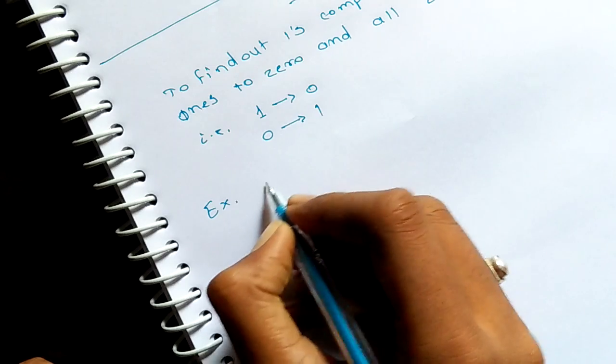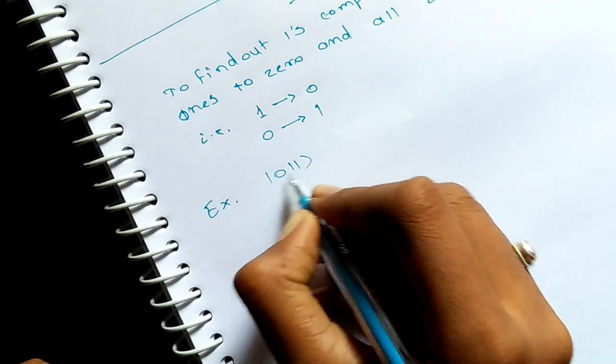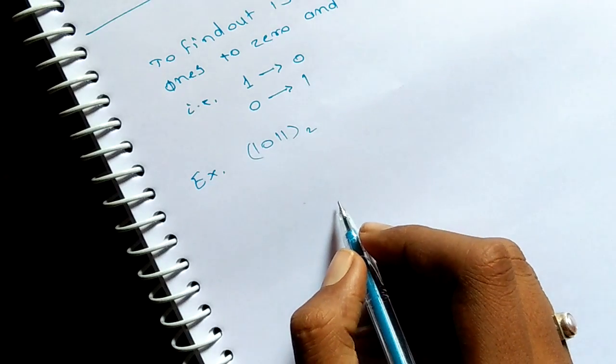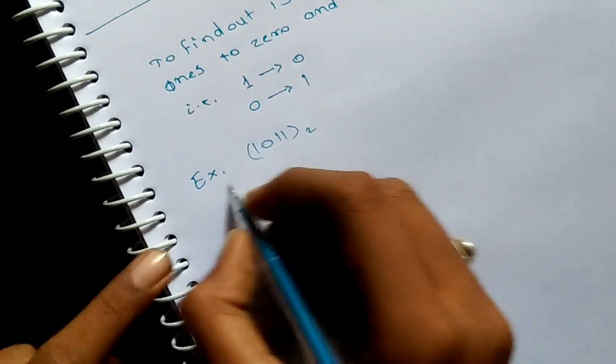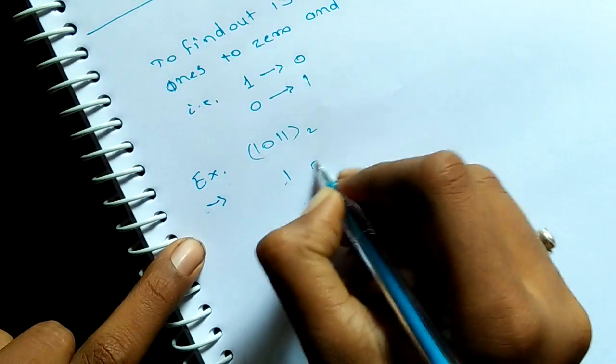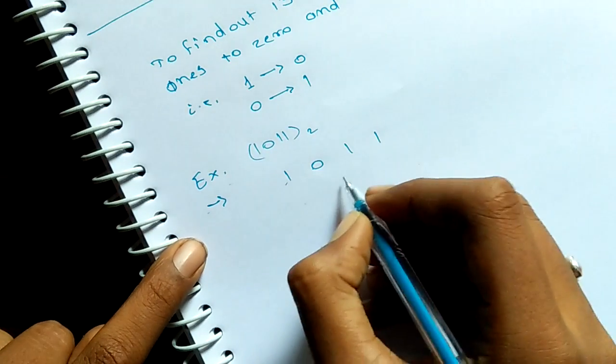First example: one zero one one. This is one of the binary number. First write down the given number separately.